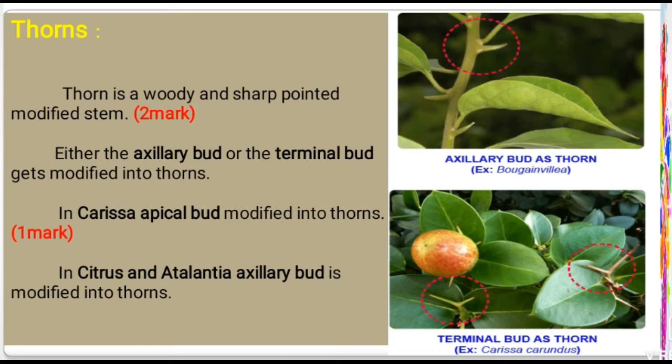The first picture shows Bougainvillea, where the axillary buds on the axis are modified into thorns — identified by a circle marking. The terminal region is the tip of the plant. The main axis has thorn as an axillary bud modification at the node region.